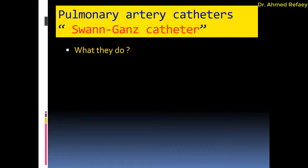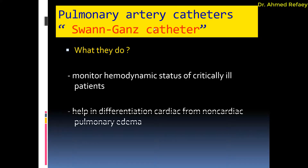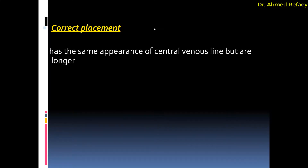Coming to the third catheter: pulmonary artery catheters, also known as Swan-Ganz catheters. What they do: they monitor the hemodynamic status of critically ill patients and help in differentiation of cardiac from non-cardiac pulmonary edema.